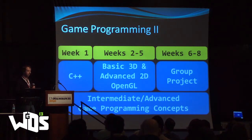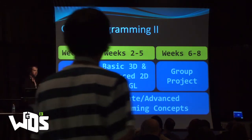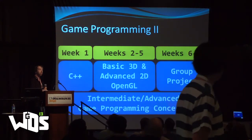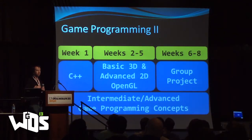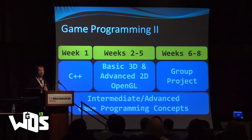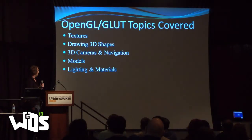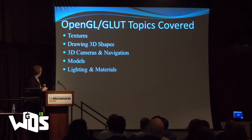In Game Programming 2, we switch gears a little bit. The first week is mostly review, but we also go over more advanced concepts, including three main things as students start to understand in detail how it's going to work. Weeks 2 through 5, we switch over to basic 3D OpenGL as well as advanced 3D OpenGL. And then the last two weeks, we refine OpenGL. On the OpenGL side, we cover textures, 3D shapes, 3D cameras, navigation, models, lighting, materials, and how to actually structure everything correctly.